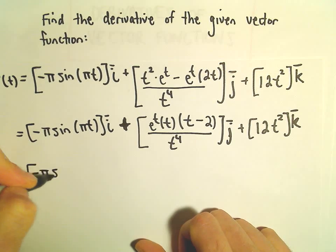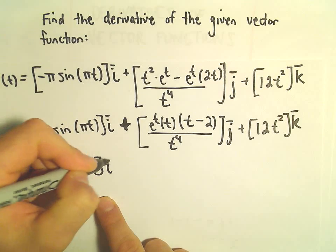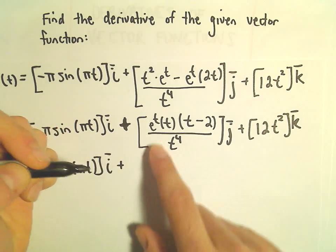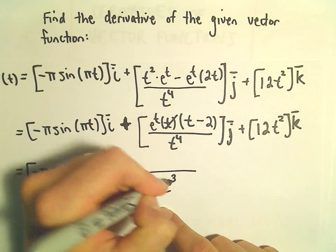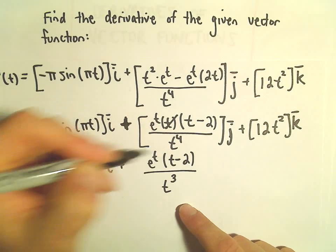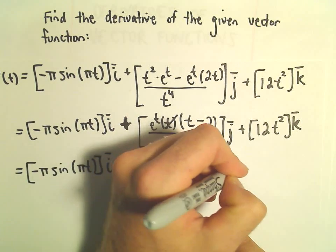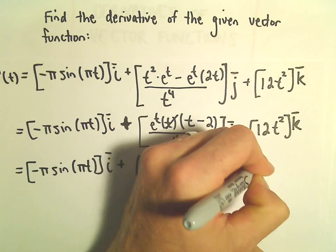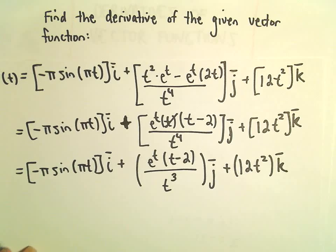So negative pi times sine of pi t times i plus, okay, so we can cancel out the t. That'll give us t to the third in the bottom. We still have e to the t times t minus 2. All of that's being multiplied by j plus our 12t squared times k. And now we have our derivative.